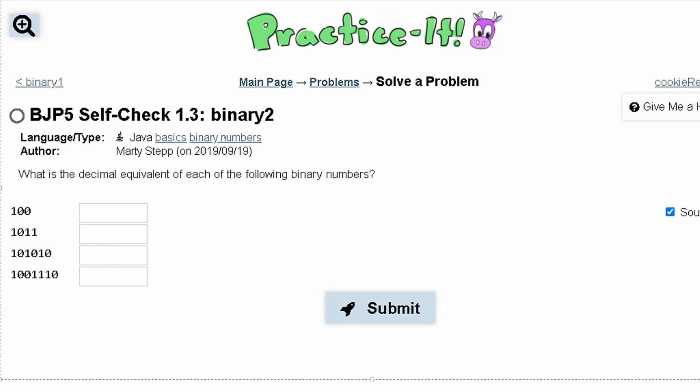For practice at self-check 1.3 binary 2, we are asked what is the decimal equivalent to each of the following binary numbers.